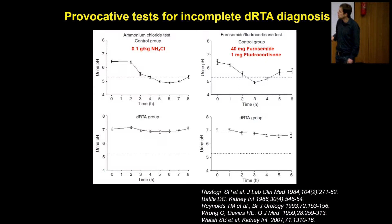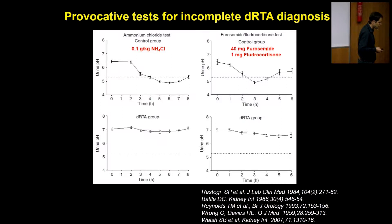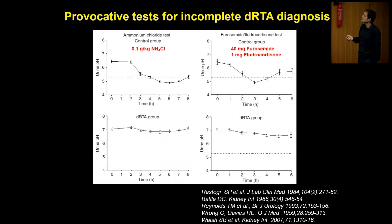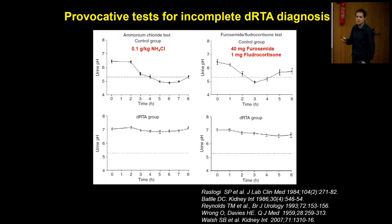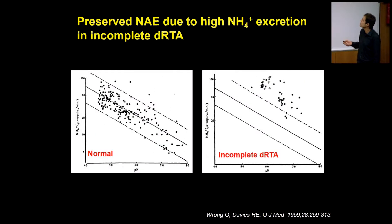Walsh and Unwin in 2007 reported results of a novel test using the combination of a mineralocorticoid and a loop diuretic, furosemide. Not in stone formers, but in complete DRTA and healthy volunteers, they showed this test yields comparable results. However, it had not been tested prospectively in stone formers.